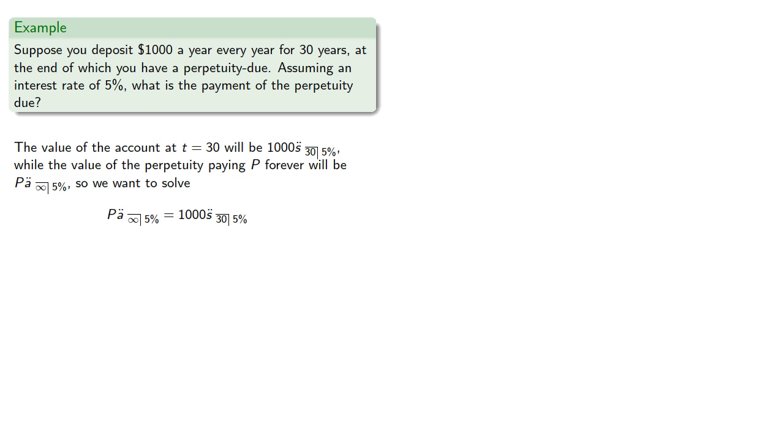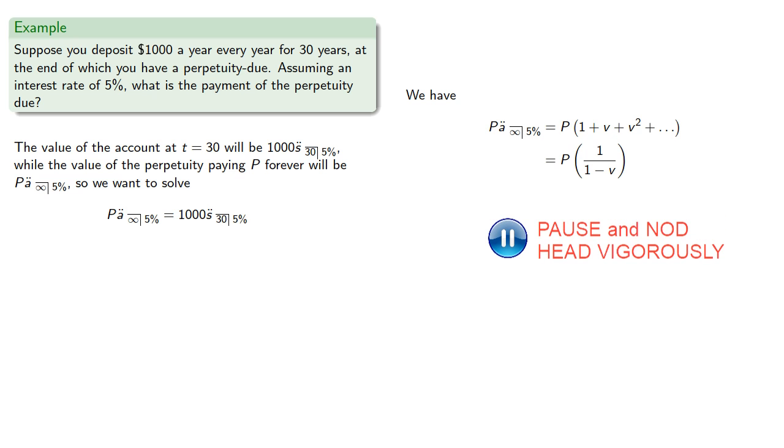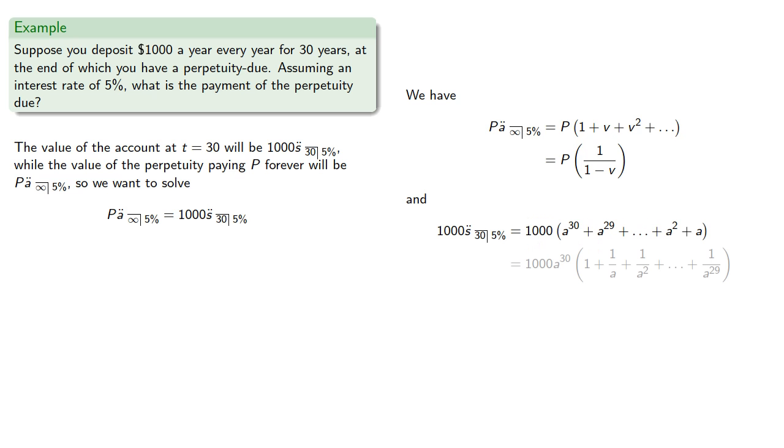Now P a double dot angle infinity at 5%, that's the payment amount times the infinite geometric series of the discount functions, and we could use our geometric series summation formula to find that value. Similarly, 1000 s double dot angle 30 at 5% can be computed, which gives us an equation we can solve for the payment value.